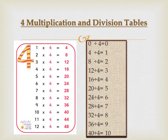Now revise the 4 times table with me: 1 4s are 4, 2 4s are 8, 3 4s are 12, 4 4s are 16, 5 4s are 20, 6 4s are 24, 7 4s are 28, 8 4s are 32, 9 4s are 36, 10 4s are 40.